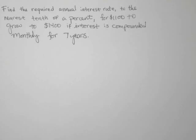In the following example, we are asked to find the required annual interest rate to the nearest tenth of a percent for $1,100 to grow to $1,400 if interest is compounded monthly for seven years.